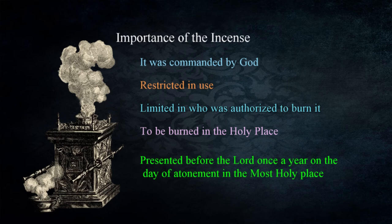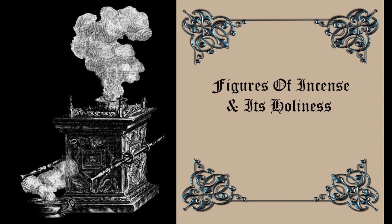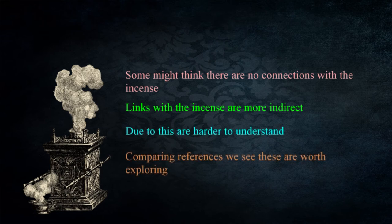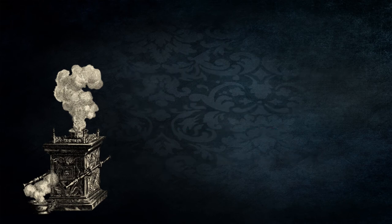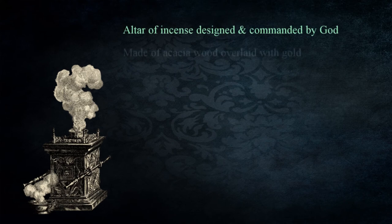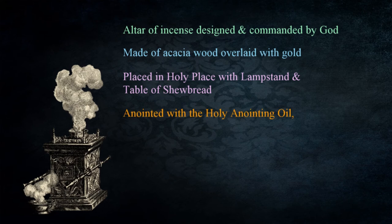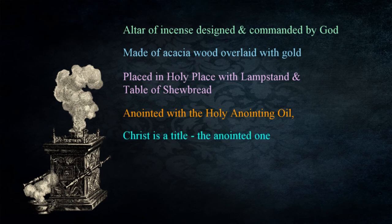The problem is that humans don't realize that while we might not see the significance of something, the command of the Lord makes it significant — or in this case, holy. This leads us to look at links and figures we can associate with the incense and the altar made to burn it. In regard to the incense, figurative representations and connections are less obvious and more elusive than with other things. Some might think there aren't any connections to be explored, but as we look at the scriptures we find some links that stand out. The altar of incense was designed and commanded by God, made of acacia wood overlaid with gold and put in the holy place along with the table of showbread and lampstand. We also see that it was anointed with the holy anointing oil the day the tabernacle was set up. The anointing oil has a direct figurative link with Christ, as 'Christ' is a title meaning 'the anointed one.' Another link with Christ is that the altar of incense was anointed with the blood of atonement once a year, representing God's provision for forgiveness through the Messiah.